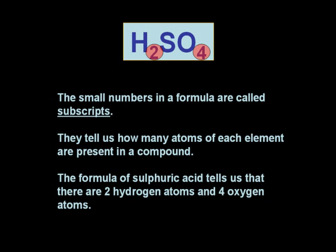Most notably, we can see there is a 2 next to the hydrogen, which tells us there are two hydrogen atoms, and a 4 next to the oxygen, showing that there are four of these. The absence of a number next to sulphur indicates that there is only one sulphur atom in sulphuric acid.